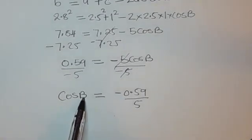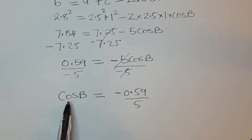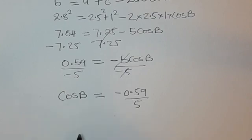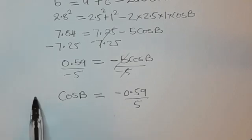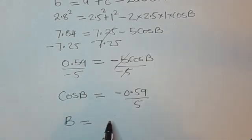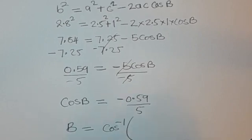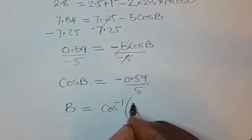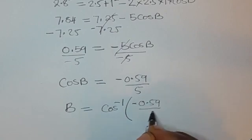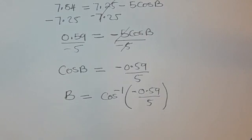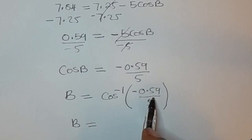To find angle B, we apply cos inverse to both sides. The cos and cos inverse cancel on the left side, so B equals cos inverse of negative 0.59 over 5.